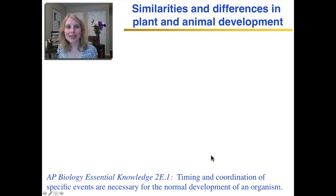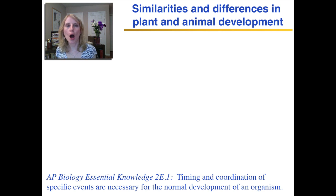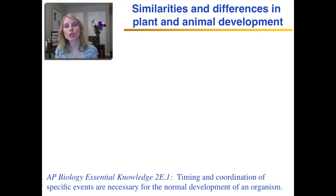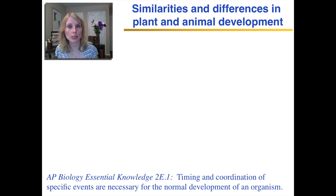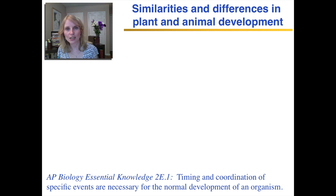Well, hello again. For me, the most fascinating area of biology is developmental biology. I just find it so interesting to learn how a complex multicellular organism develops from a single fertilized egg. In animal development, how do certain cells know that they should become heart cells or liver cells or skin cells? And in plants, how do the cells know if they should be petals or stamens or roots? I wanted to give you just a brief overview, an introduction to the similarities and differences in plant and animal development, and hopefully you'll continue your study of this topic in the future.